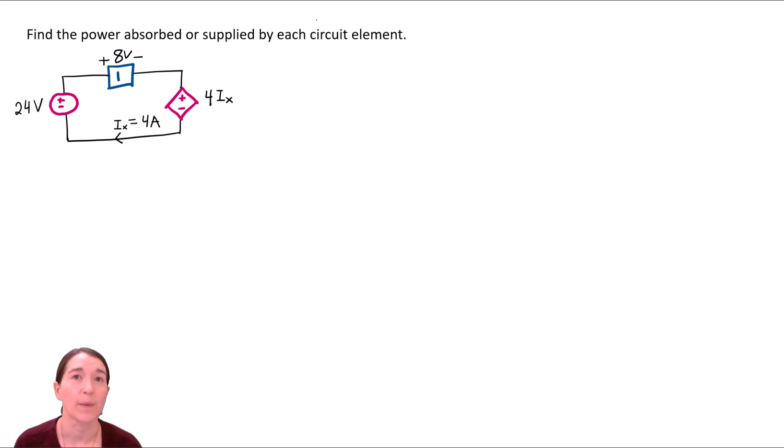Here we're looking at a problem, and the first thing we do when we have a problem is we read the problem and figure out what we're trying to find. So, find the power absorbed or supplied by each circuit element. We have a circuit with three components, three elements, and so the next step, once we read it, is to write down what we want to solve for.